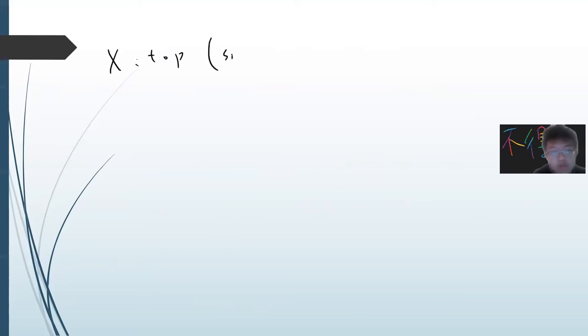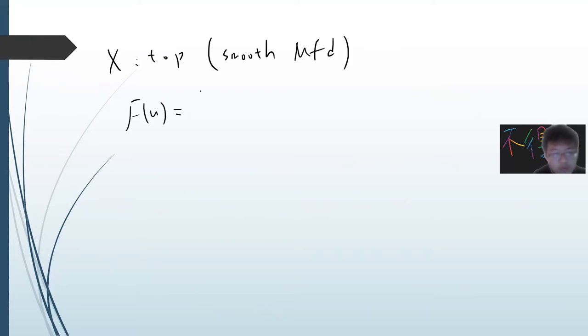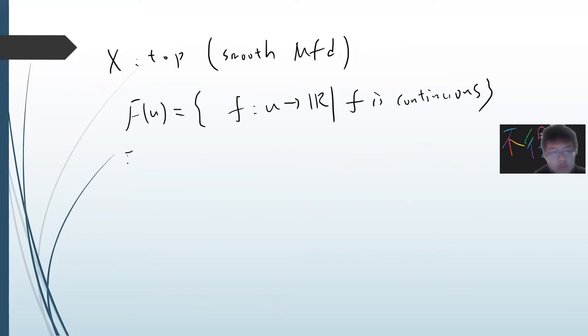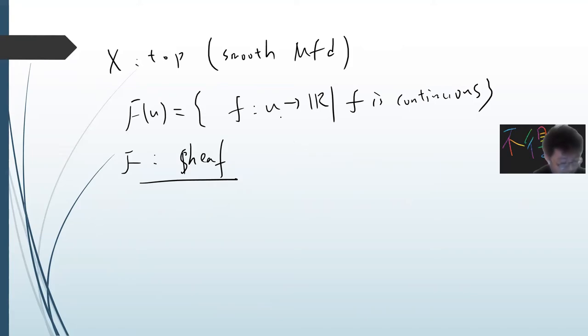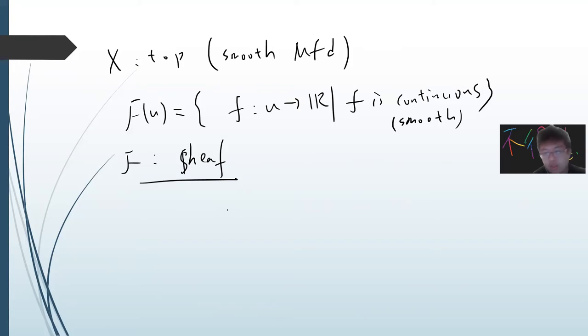There are many examples of sheaves. A famous one: if X is a topological space — for instance a smooth manifold — then the pre-sheaf F(U) = continuous functions from U to ℝ is actually a sheaf. You can try to prove this. If you require X to be a smooth manifold and require smooth functions, that is also a sheaf, but adding conditions like boundedness may break the sheaf property.